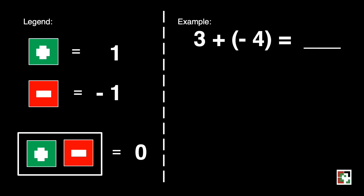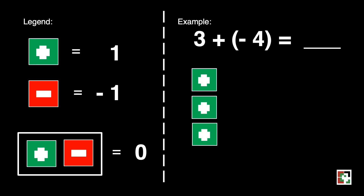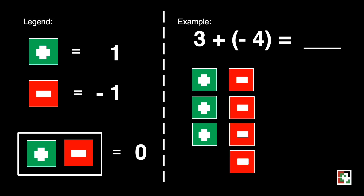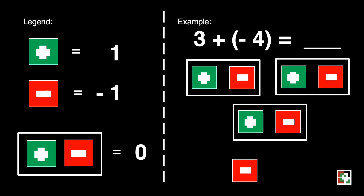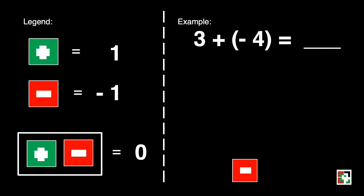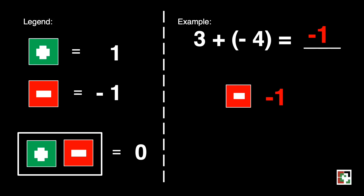Another example: positive 3 plus negative 4. Positive 3 is represented by 3 green squares, while negative 4 is represented by 4 red squares. Since we have both red and green squares, we have to pair them up so that we can identify the 0 pairs. Let's rearrange these tiles. We have 3 zero pairs — that's 0 plus 0 plus 0, equivalent to 0 or nothing. What is left is 1 red square, which is equivalent to negative 1.